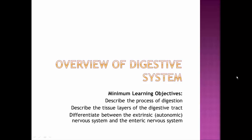In this video lecture, we're going to look at an overview of the digestive system, covering the basics of its structure and functioning. That includes what processes are involved in digestion, what tissue layers exist along the digestive tract, and the control of digestive system functioning through the extrinsic autonomic nervous system — more specifically the parasympathetic nervous system — and then the enteric nervous system, which is an internal nervous system. The digestive system has its own little brain, so to speak.